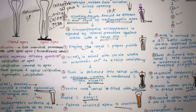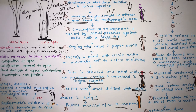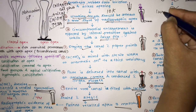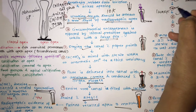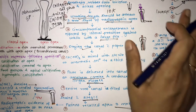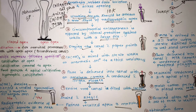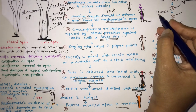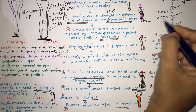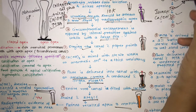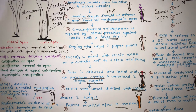An important extra point for single-step MTA apexification: tissue pH may affect the hydration reaction and final physical properties of MTA. Because of this, it is advised to insert calcium hydroxide into the canal for at least one week before starting MTA apexification, to avoid complications.